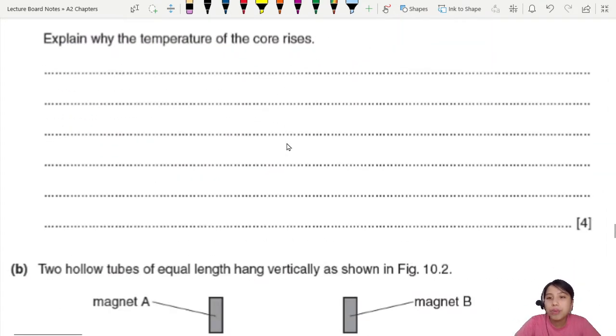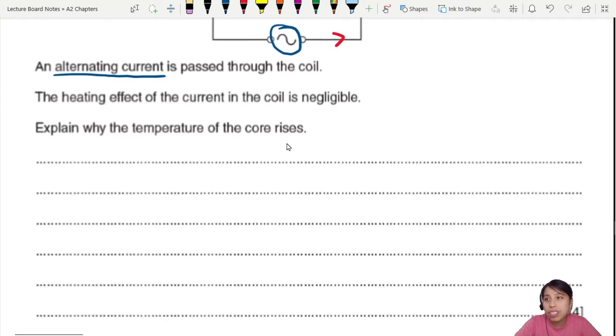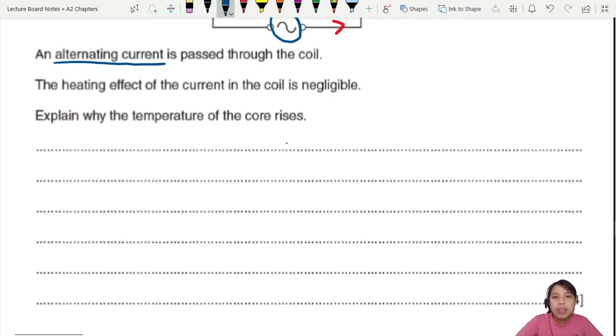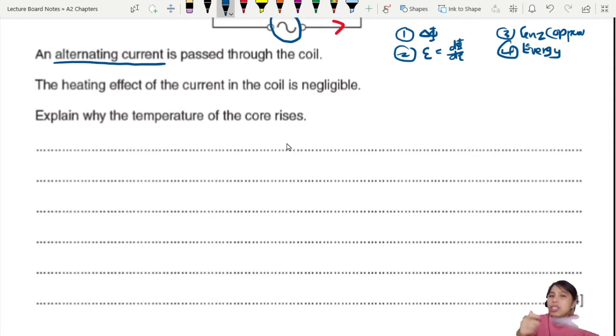So how do you explain this for four marks? Well, whenever there's an explain question for induction, remember there's a general template on how you can answer it. First thing you can talk about is change in flux. Second thing, Faraday's law. Is there an EMF induced? Because d phi by dt. Then third thing, Lenz's law. Oppose a change. What is opposing the change? Current induced opposes a change or some magnetic field opposes a change. And lastly, oftentimes you're required to talk about energy. Is there energy loss? Usually heating. So whenever you see long explain question, just think of these four main steps and explain everything.